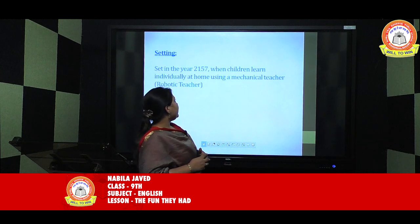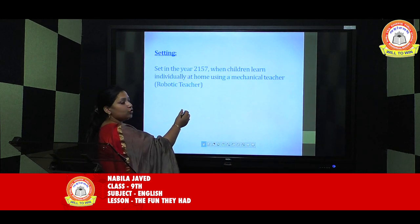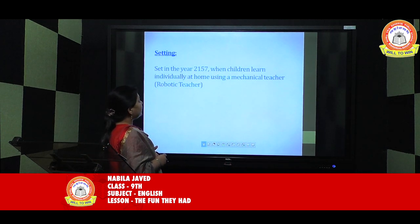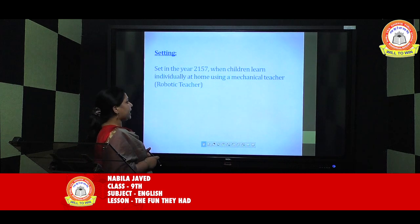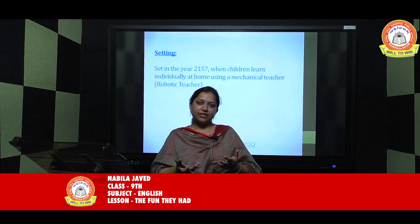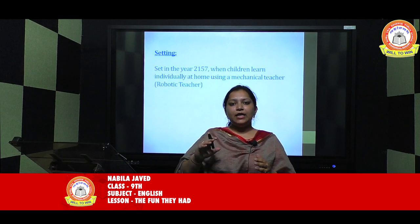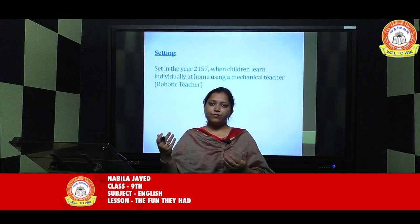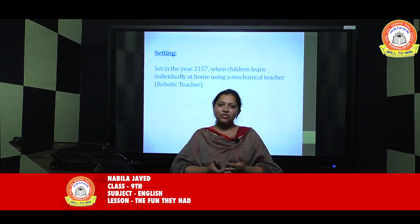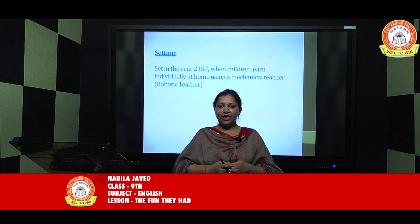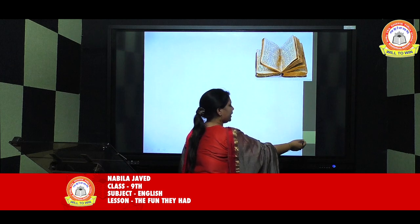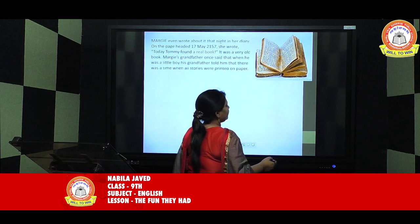The setting of this story is in the year 2157 — 100 years from now — where children learn individually at home using a mechanical or robotic teacher. We already know that our era is computerized and everything is done by computers. So we can imagine that after 100 years, the teaching, studying, methods, and books will also change and become very high-tech. We will discuss futuristic schools and compare them with old-style schools.